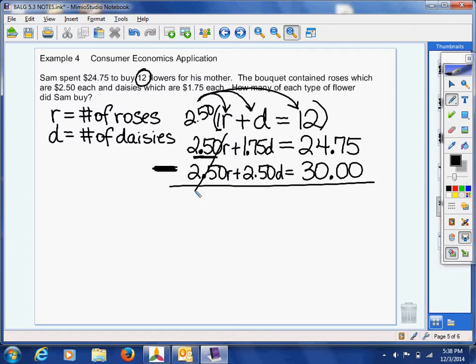So let's do $1.75 minus $2.50. So that's going to be negative $0.75. And then let's do $24.75 minus $30, and I'll get negative $5.25. I'm not concerned. Both numbers are negative. The negatives are going to cancel out. So now let's divide each side by negative 0.75, and I got d is 7. So apparently he bought 7 daisies for his mom.